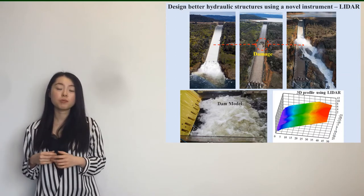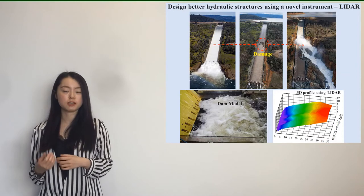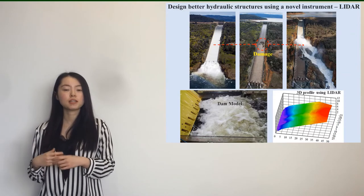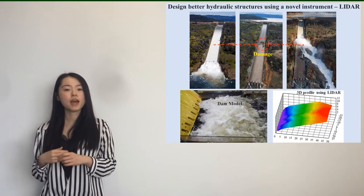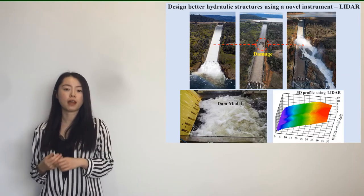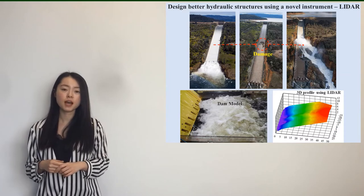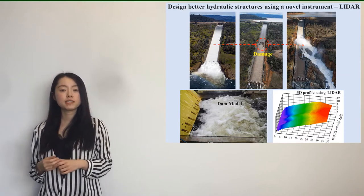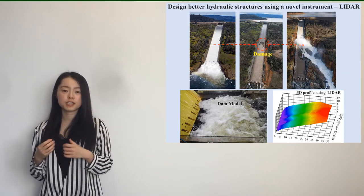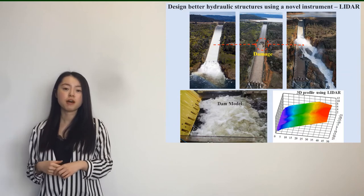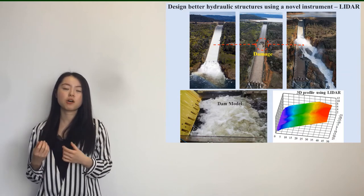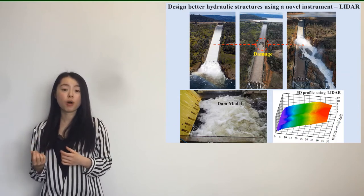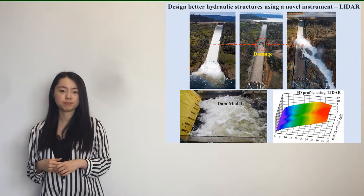We always see white water in these structures, especially in the large ones, and the white water is what we call air-water flows. In air-water flows, the free surface is not just a steady and tranquil boundary, but a mixture of air and water — and that is why we can see white water.